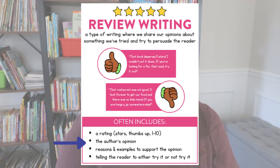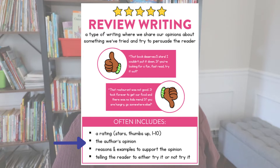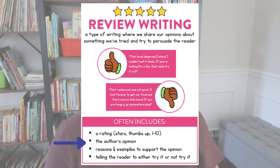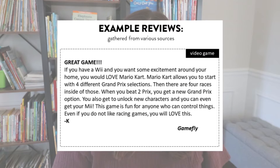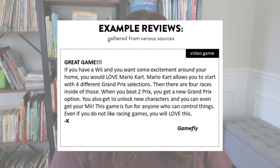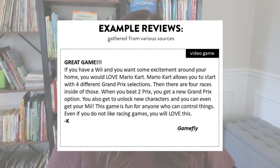A review often includes a rating — a star rating, a one through ten rating, a thumbs up or thumbs down. It includes the author's opinion, reasons and examples to support that opinion, and they often tell the reader to either try it or not try it. After sharing what a review is, I actually show my students some real life reviews I found on different sites. For example, from Gamefly: 'Great game. If you have a Wii and you want some excitement, you would love Mario Kart.' And it goes on to explain why that person loves the game.